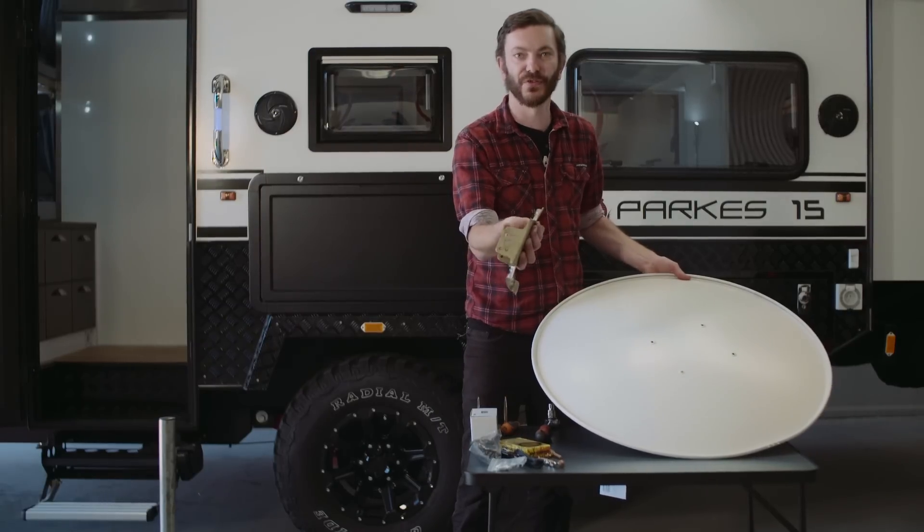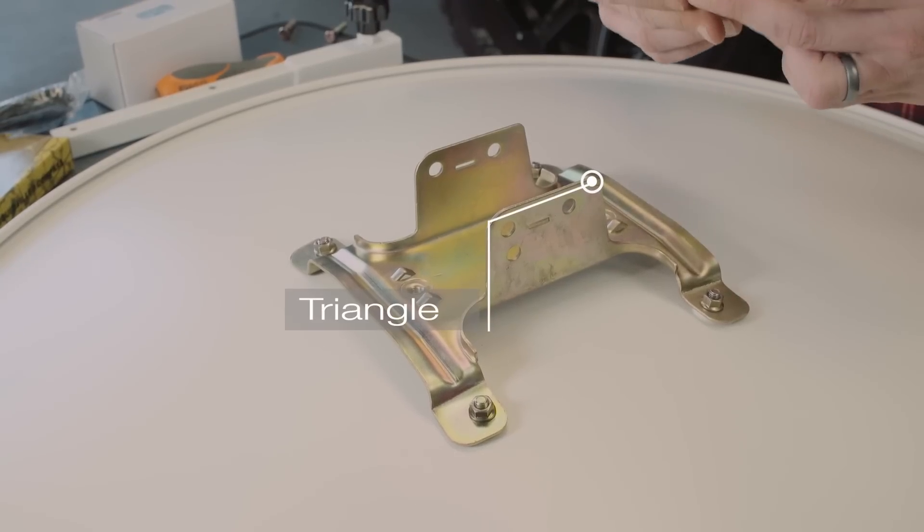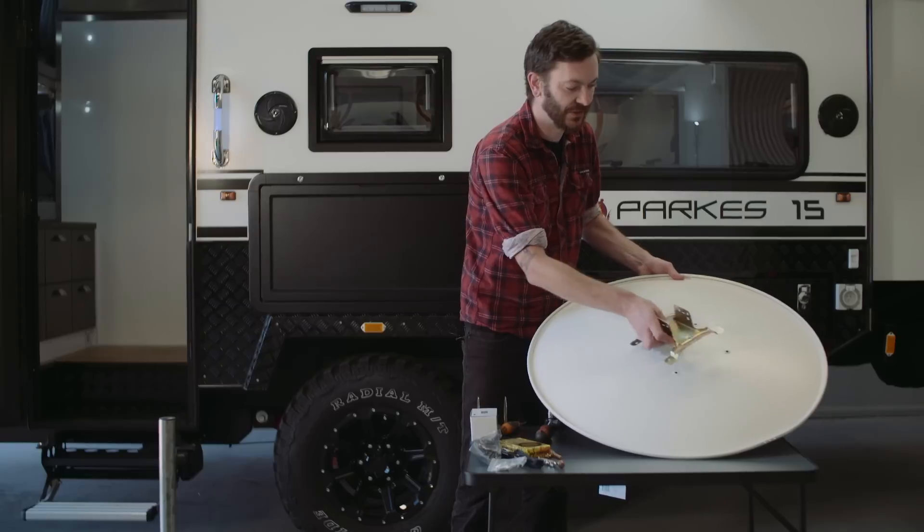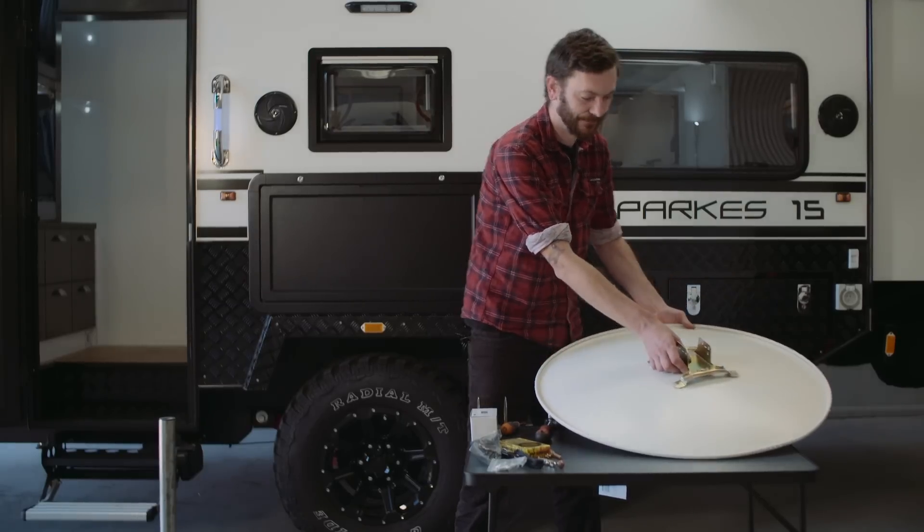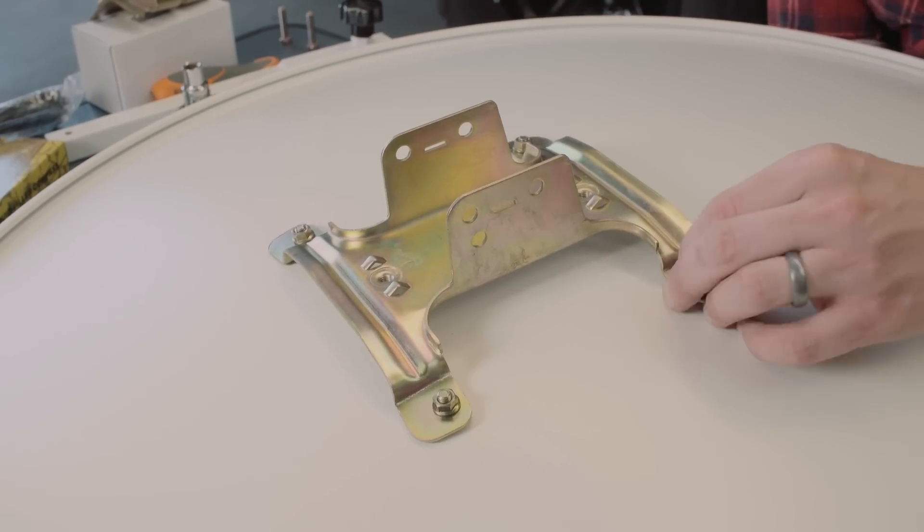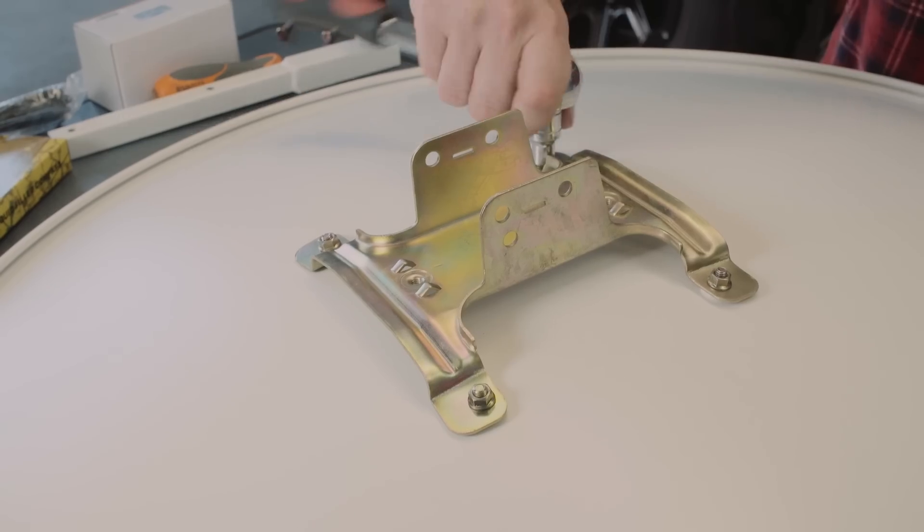Now it's important to note there is a triangle on this that needs to be facing down and the bolt holes need to be lower on the dish. And it sits just like that. You will need a 10mm spanner or socket as well, but don't go too tight because you can damage the dish.